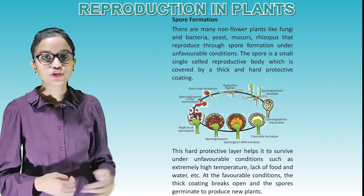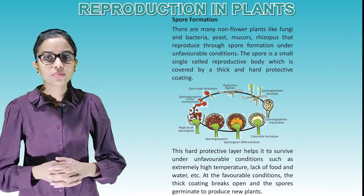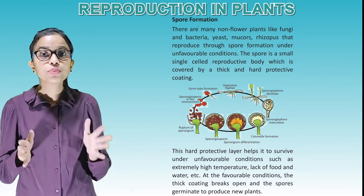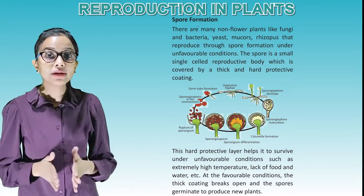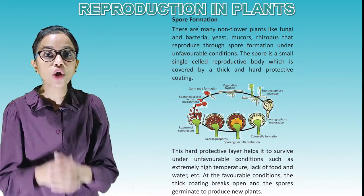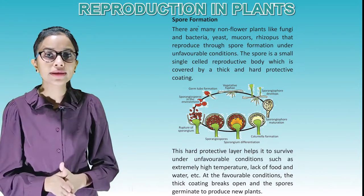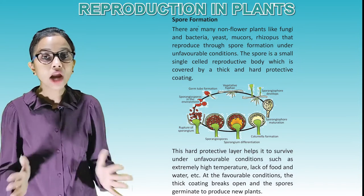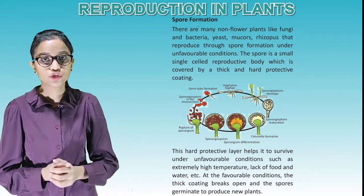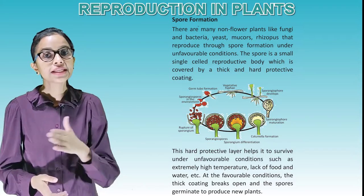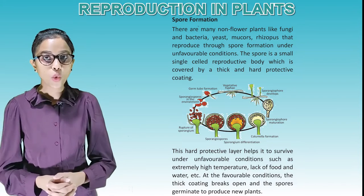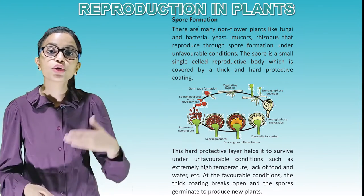Spore formation: There are many non-flowering plants like fungi, bacteria, yeast, mucor, and rhizopus that reproduce through spore formation under unfavorable conditions. The spore is a small single-cell reproductive body covered by a thick and hard protective coating. This hard protective layer helps it to survive under unfavorable conditions such as extremely high temperature, lack of food and water. At favorable conditions, the thick coating breaks open and the spores germinate to produce new plants.